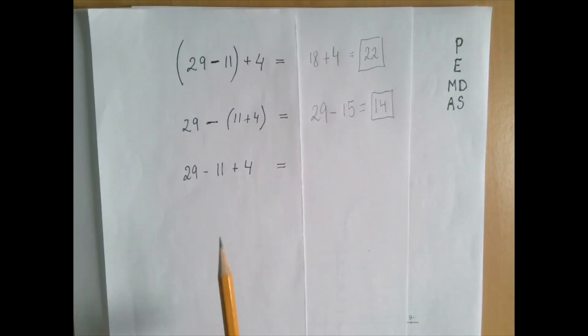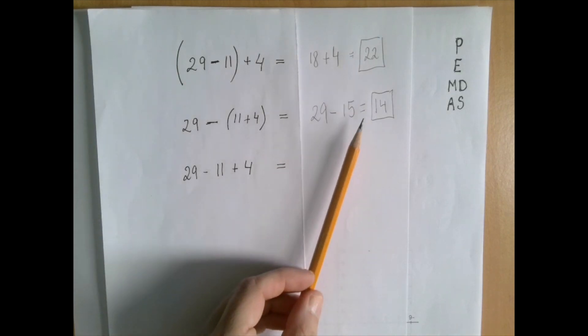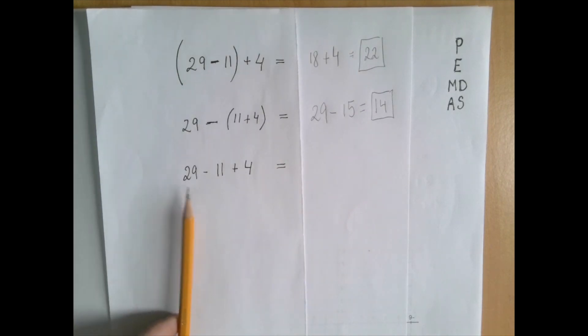Okay, so here is this third one. And there is no parenthesis to help us to sort out in what order do we need to perform the operations. However, we better get it right because these two are different, so we need to understand what this line without a parenthesis means.